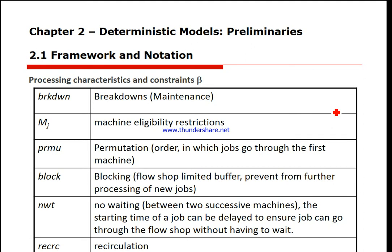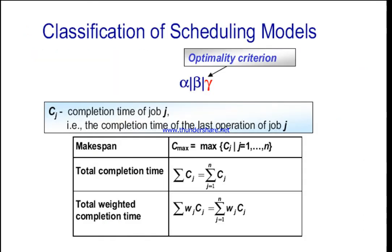Blocking is a phenomenon that occurs in the flow shop when a limited buffer prevents further processing of a new job. No-wait means a job is not allowed to wait between two successive machines — there is no buffer between machines. Blocking means limited buffer; no-wait means no buffering or no waiting between machines. Recirculation means a job may have to go back in the system.